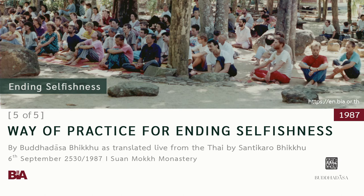Now we'll talk about the methods for seeing these three characteristics. In general, we can talk about two complementary methods. The first is through study — through thinking and reasoning about these things, we develop a theoretical knowledge of the three characteristics. The second method is that of practice: practicing Dhamma correctly in order to realize these three truths directly within the mind.